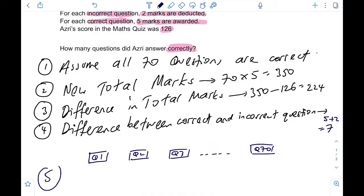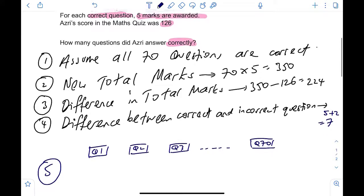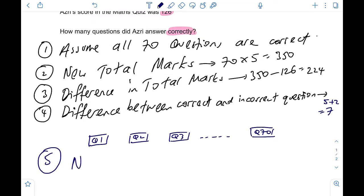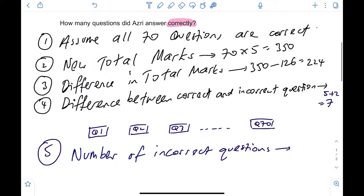Step number five. We do a simple division. And this again, as I've said earlier on in this question, you will get a number of incorrect questions. And this will be the bigger difference divided by the smaller difference. 224 divided by 7 is 32 incorrect questions.